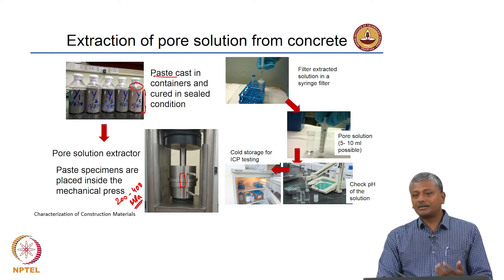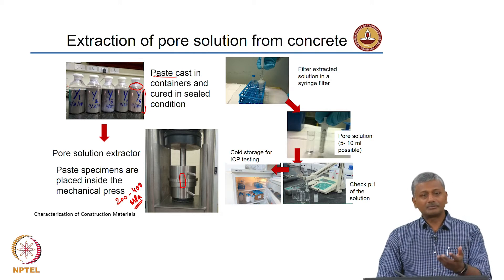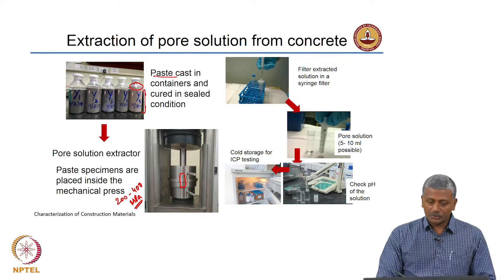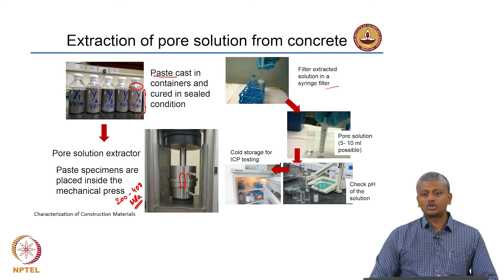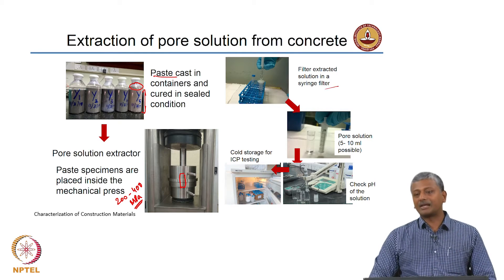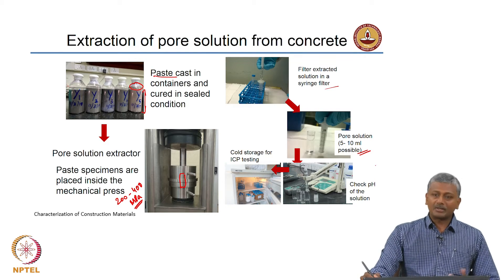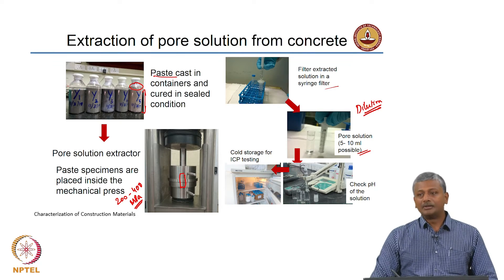If you are lucky, you will be extracting a few milliliters out of this specimen. For many specimens, you really have to go to very high pressures before you can get any pore solution out. This pore solution is extracted into a syringe filter. You may want to dilute this pore solution to ensure sufficient amount is available for analysis — 5 to 10 milliliters is possible, but sometimes you will only get 1 or 2 milliliters, so dilution is sometimes needed to get a larger fraction of the sample for analysis.